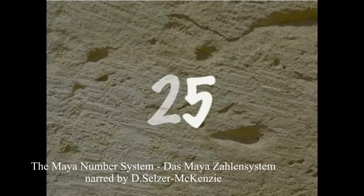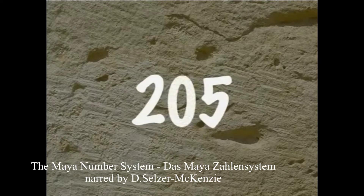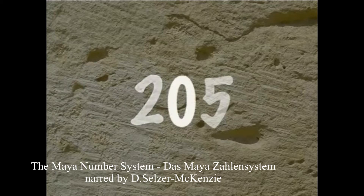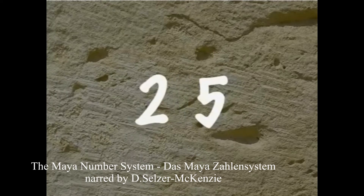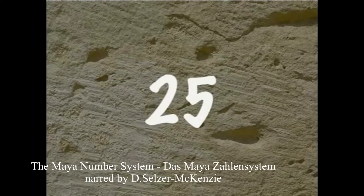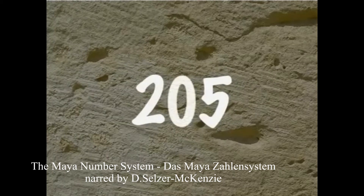In the base 10 numbering system, we write numbers in increasing order from right to left. For example, in the number 25, the number 5 is in the 1's place and 2 is in the 10's place. Now let's take a look at the number 205. The number 5 is in the 1's place and the 2 is in the 100's place, but a 0 is in the 10's place. This is because nothing is in the 10's place. If we didn't have the 0 to fill that space, we would have no way to distinguish between 25 and 205. Without the 0, place value could not exist.